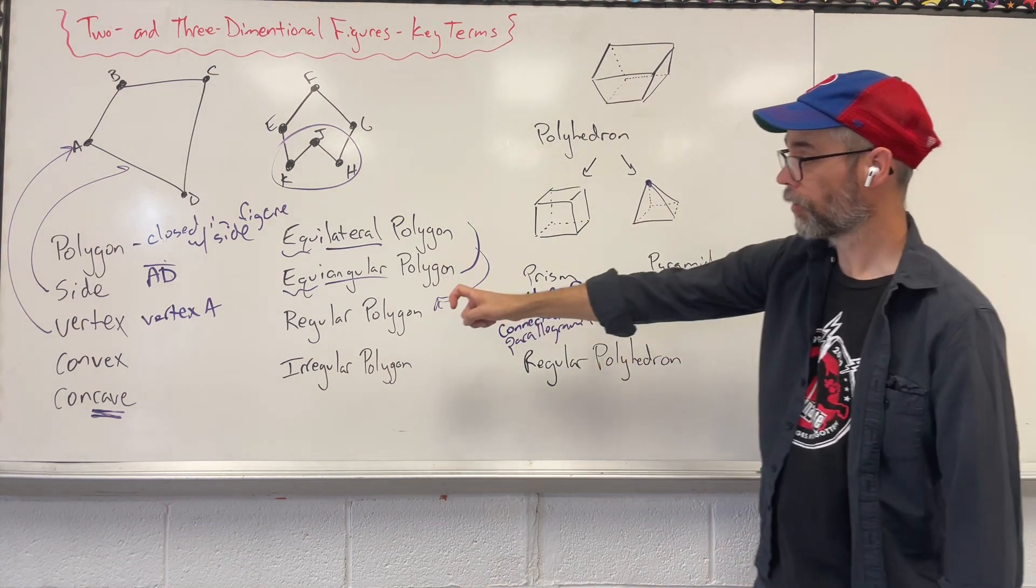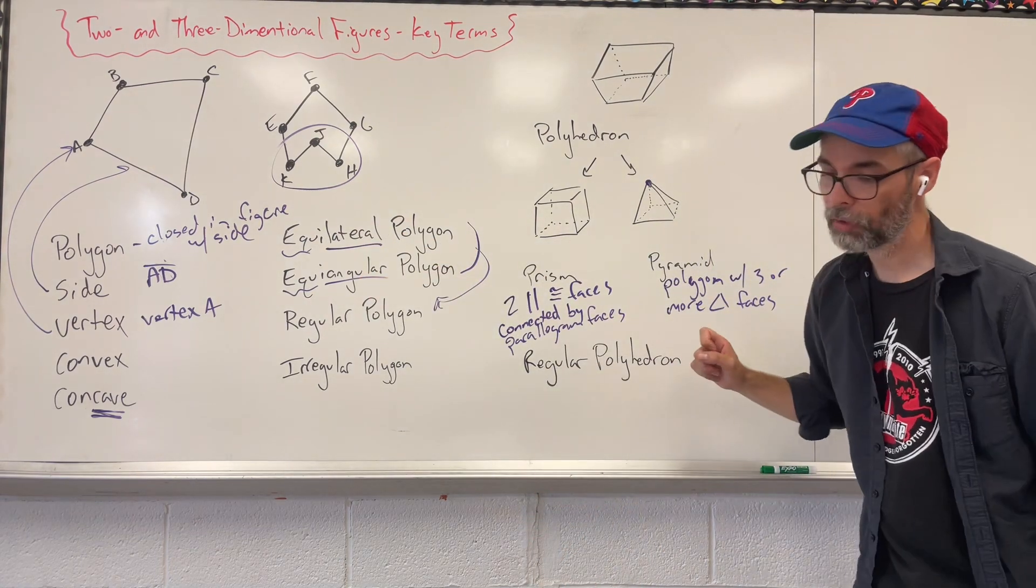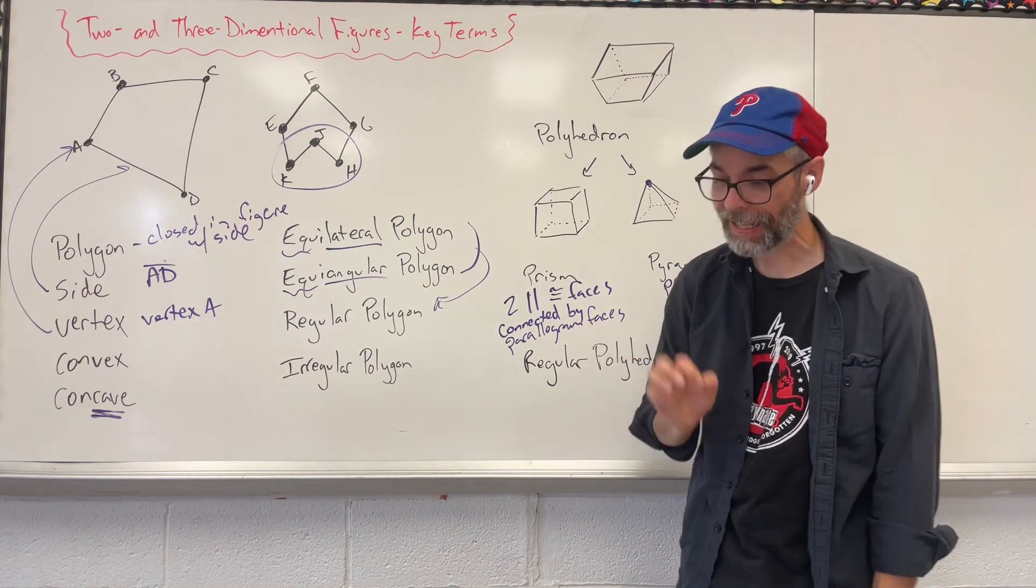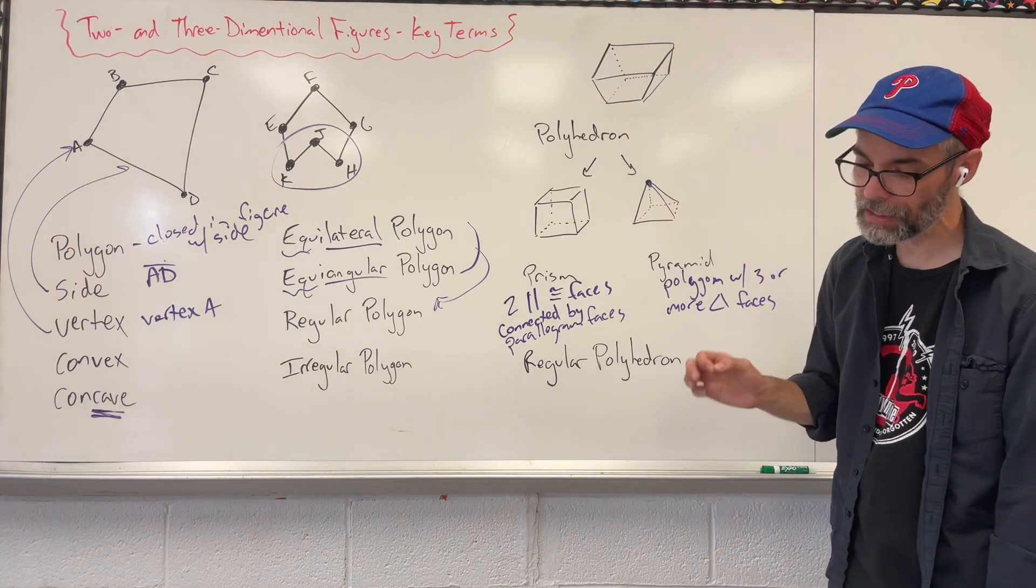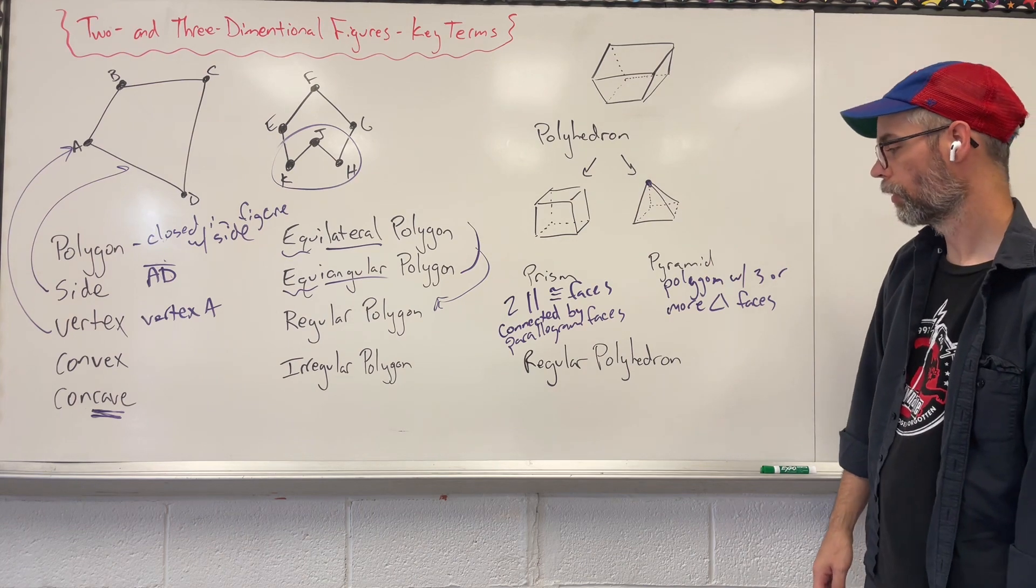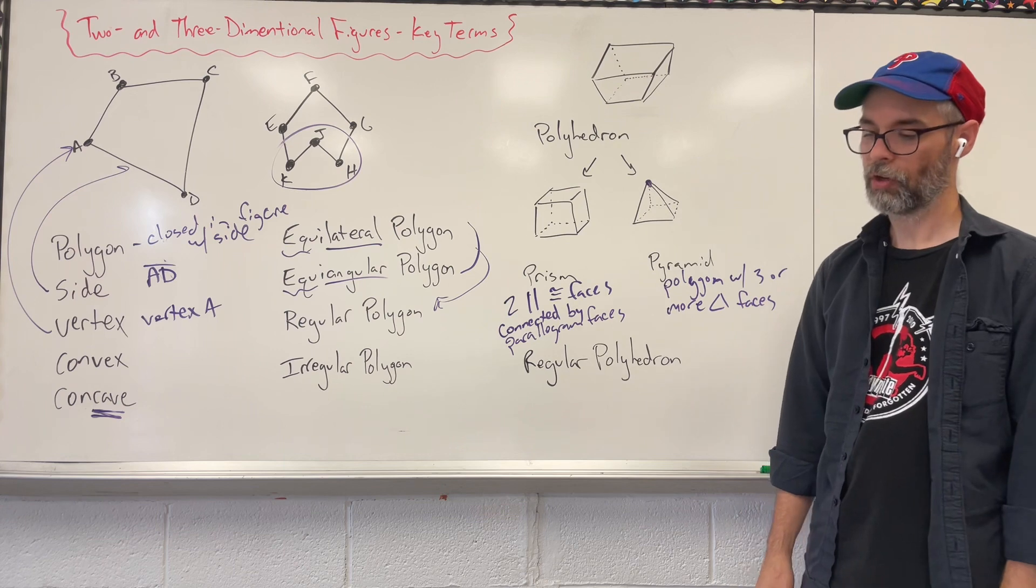Now, like with a regular polygon, where we had equal sides, equal angles, we have something called a regular polyhedron. It's when all the faces are regular and all the edges are congruent, you get a regular polyhedron. When all your faces are regular and all the edges are congruent.